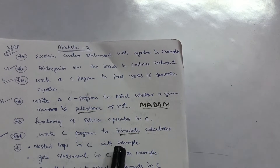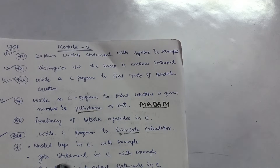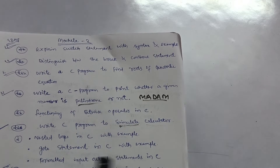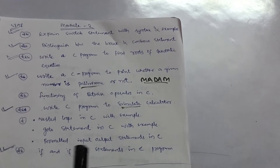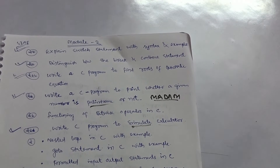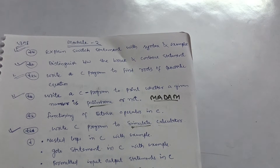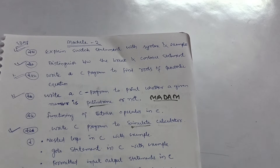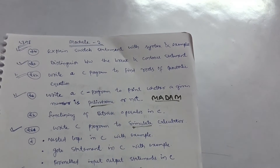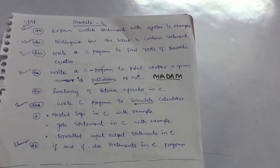Also cover nested loops in C with example, the goto statement in C with example, formatted input/output statements in C, and the difference between the if and if-else statement. These are eight important questions from Module 2. You should organize your notes for this subject properly so it becomes easy and comfortable to cover the important questions in a serial-wise manner.